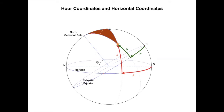To transform between two coordinate systems, all you need to do is write the coordinates of a particular object, say a star, draw a spherical triangle, and apply the formulas of spherical trigonometry to that triangle. In hour coordinates, the hour angle is measured from the meridian to the hour circle of the star.